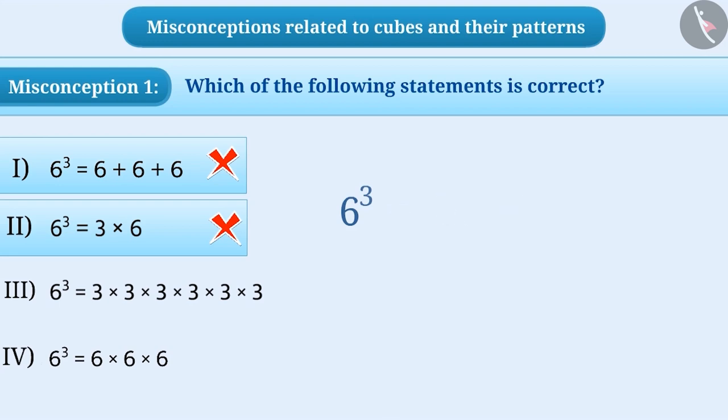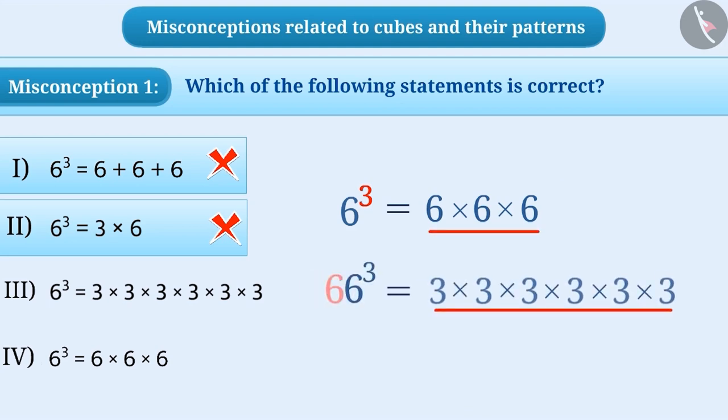Some children are unable to decide whether they have to multiply the number three times by itself or multiply three by itself as many times as given number. In such a situation, they give option 3 as the answer which is a wrong answer.